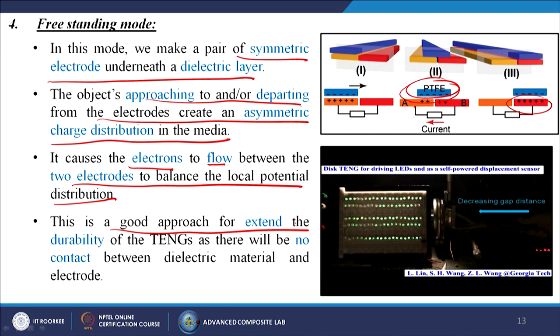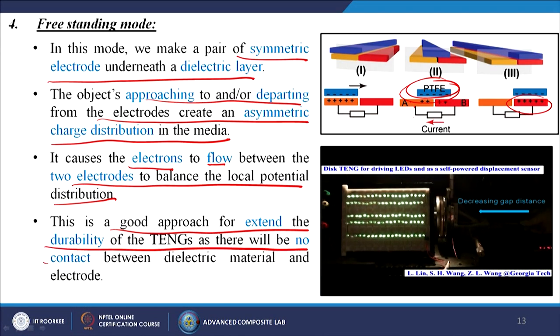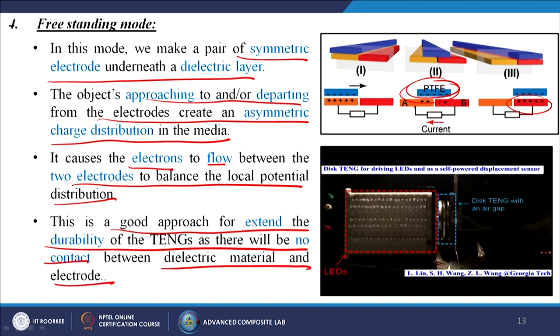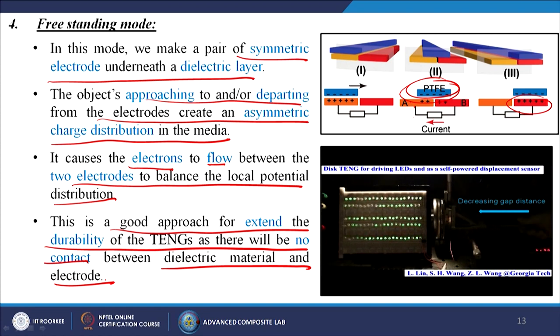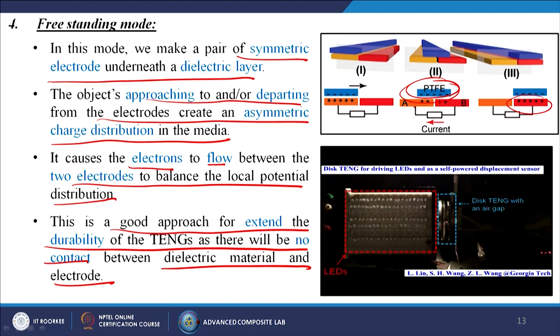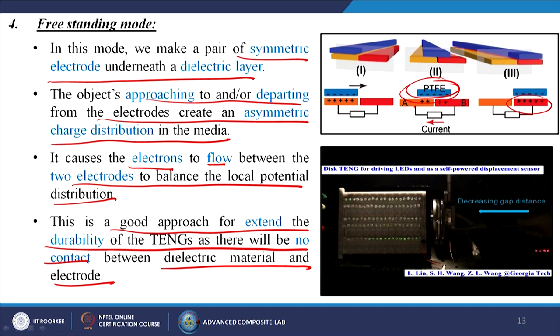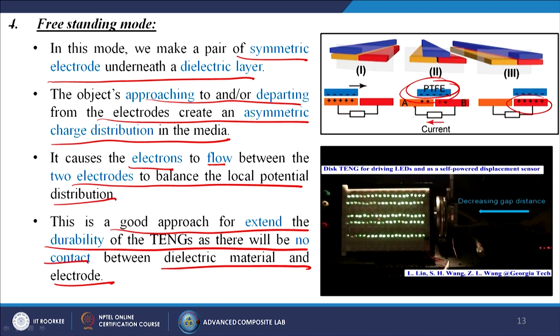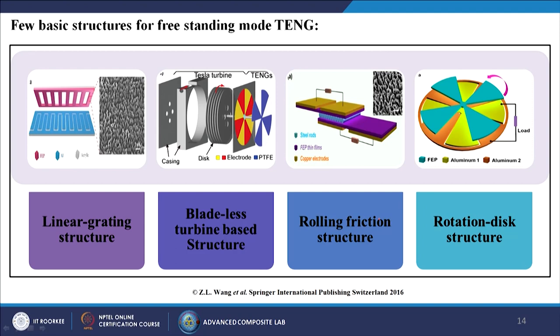This is a good approach for extending the durability of TENG as there will be no contact between the dielectric material and the electrode. By decreasing the gap distance, the LED glows automatically. Basic structures for the freestanding mode include the linear grating structure, a bladeless turbine-based structure, a rolling friction structure, and a rotation disk structure. These are the examples of the freestanding mode triboelectric nanogenerators.